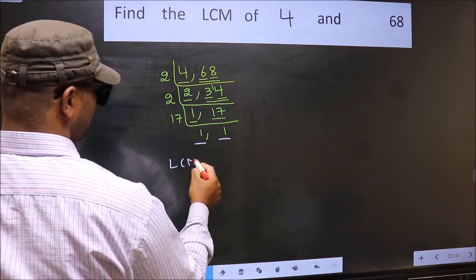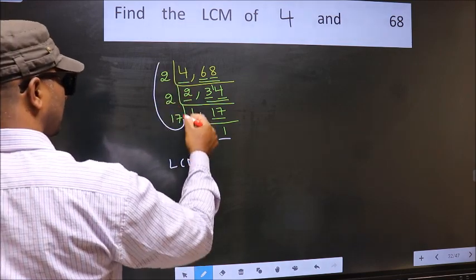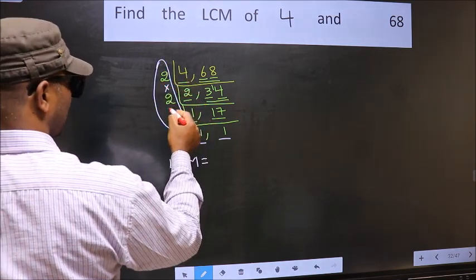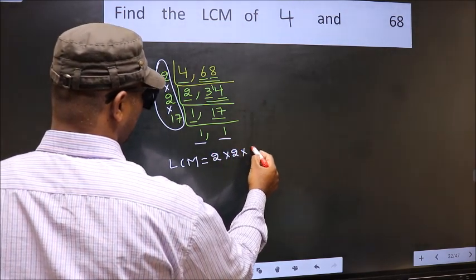So our LCM is, LCM is the product of these numbers. That is 2 into 2 into 17.